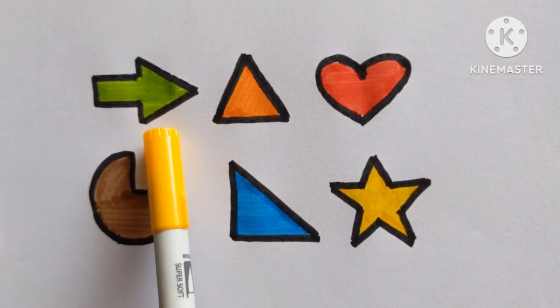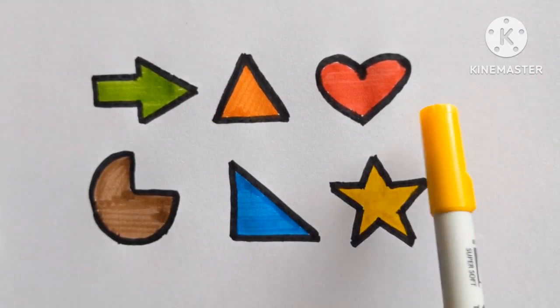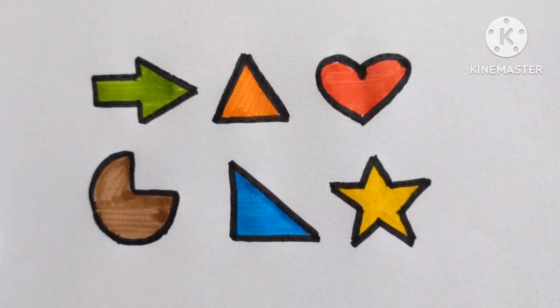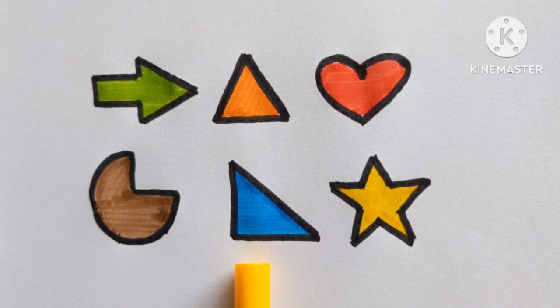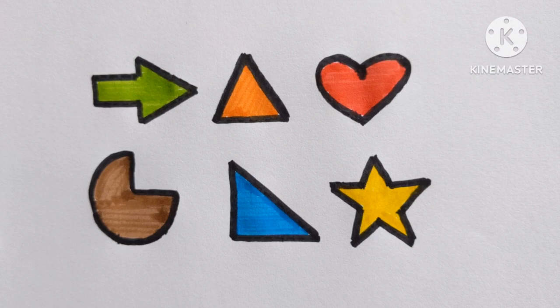Arrow. Light green color. Triangle, orange color. Heart, red color. Pie, brown color. Right angle triangle, sky blue color. And star, yellow color.